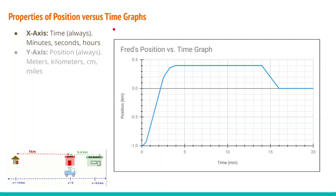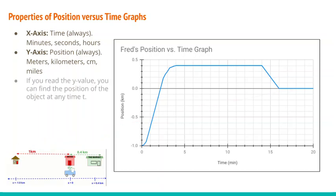On the y-axis, we have to have position. Position can be in kilometers, meters, centimeters, or miles — any measurement of position will work depending on the scenario. If you look at the y-value on a position versus time graph, you can find the position of an object at any time t. So you can use this graph to find Fred's position at any time.